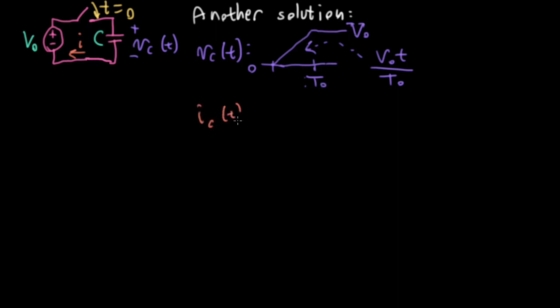Well, what's the current? It's going to be the derivative of this times the capacitance. So, in this region out here for T less than zero, and in this region out here for T bigger than T0, it's going to be zero. Nothing interesting is happening in there. But, in this region in between, it's going to be C times the derivative of this function, which is going to be V0 over T0.